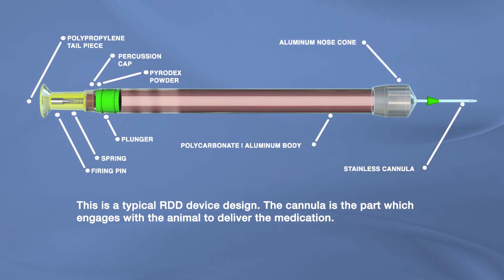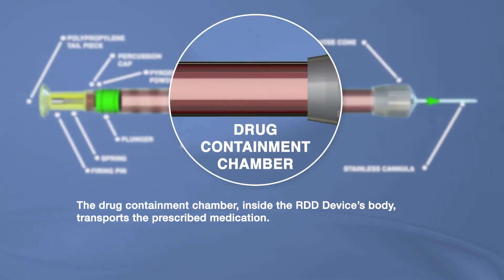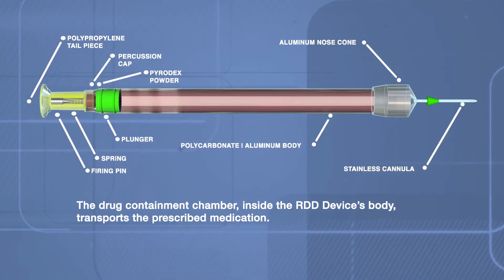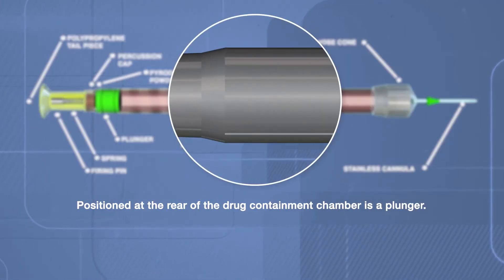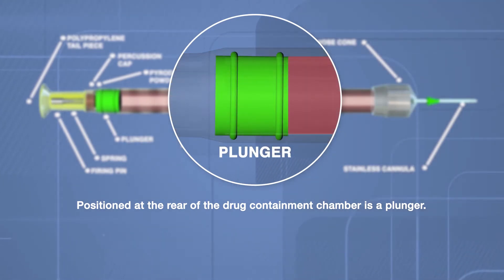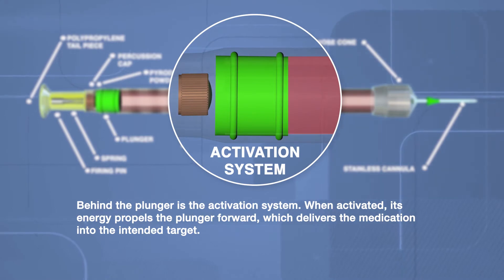This is a typical RDD device design. The cannula is the part which engages with the animal to deliver the medication. The drug containment chamber inside the RDD device's body transports the medication. Positioned at the rear of the drug containment chamber is a plunger. Behind the plunger is the activation system.